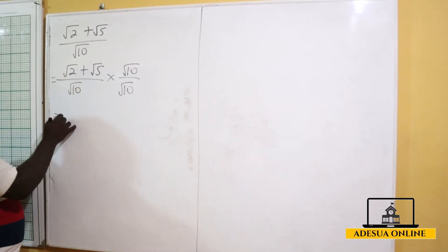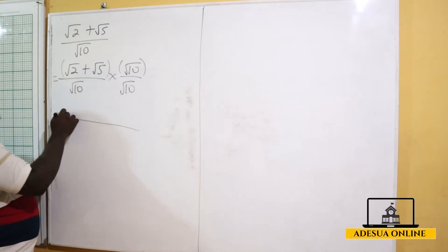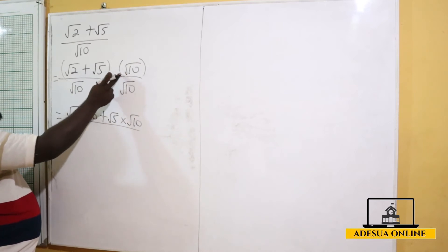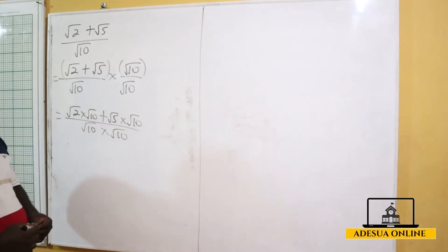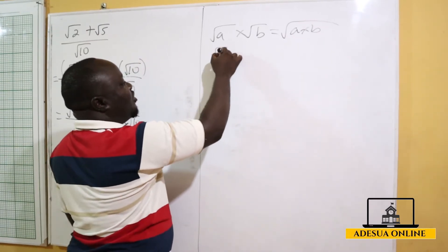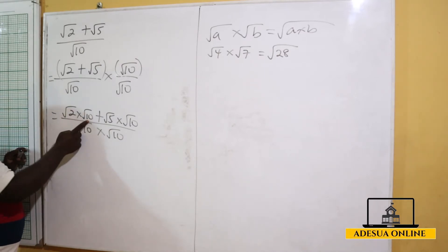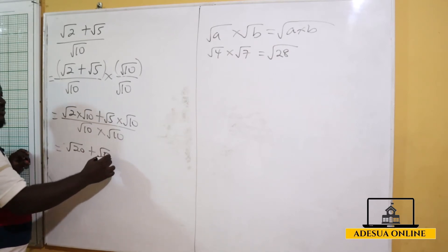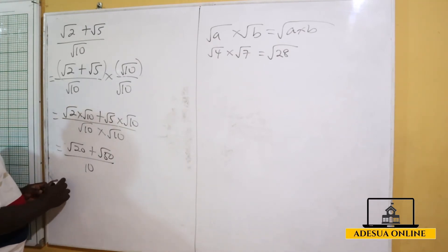We perform normal algebraic expansion for a binomial times a monomial. Root 2 times root 10 plus root 5 times root 10, all divided by root 10 times root 10. Recall that root a times root b equals root ab. So root 2 times root 10 is root 20, root 5 times root 10 is root 50, and root 10 times root 10 is root 100, which equals 10.